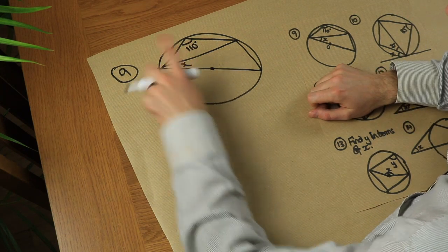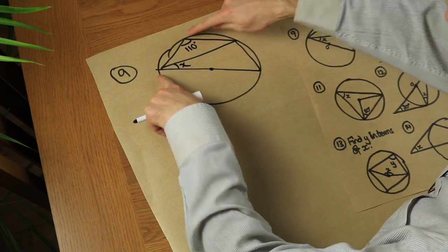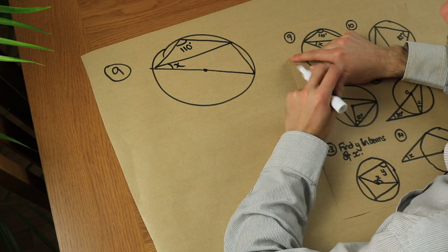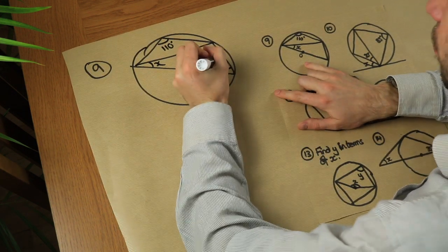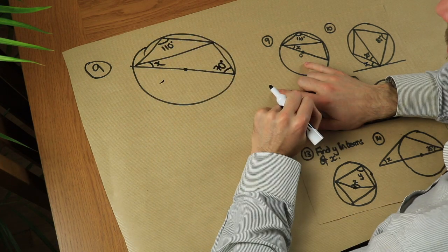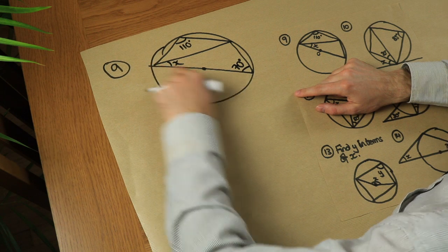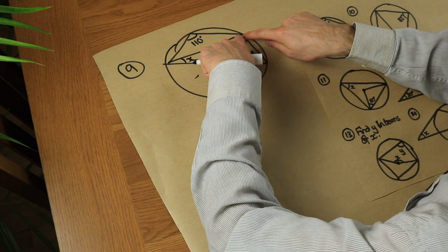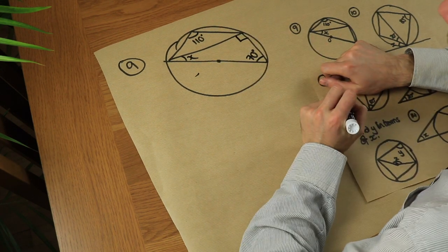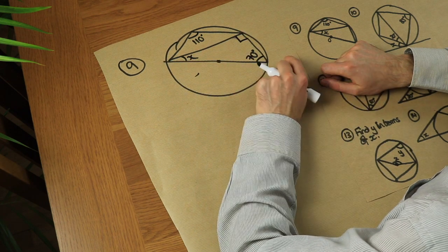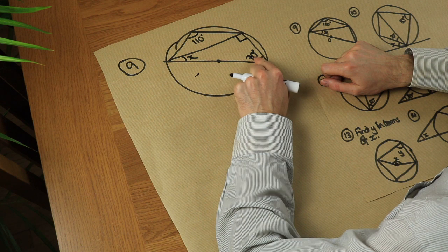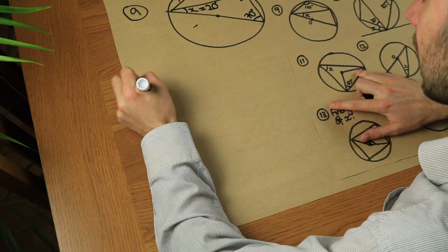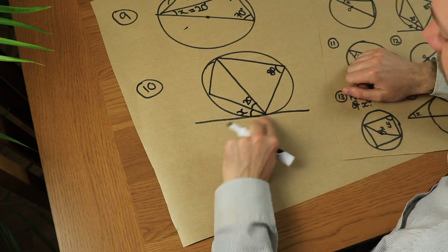For question nine we use multiple circle theorems. First, this is a cyclic quadrilateral, so opposite angles add to 180 — opposite to 110 is 70 degrees. Also, this line is the diameter, so the angle in the semicircle at the circumference is 90 degrees. Now in this triangle, 70 plus 90 plus x equals 180, so the remaining angle x must be 20 degrees.